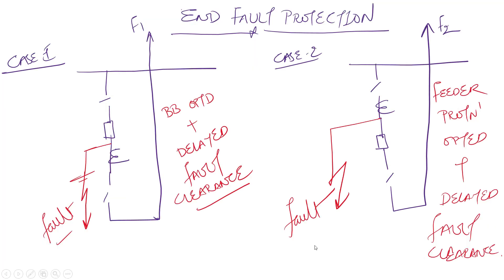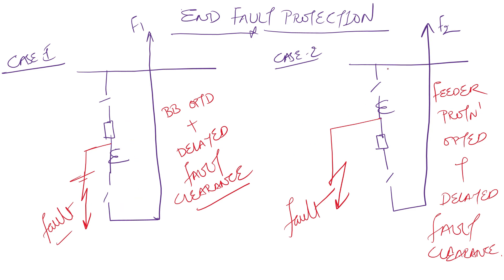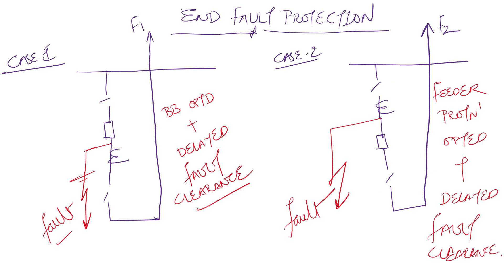I have drawn two SLDs in a single slide, for 1.5 CB scheme only. There can be two different cases. In case 1: disconnector, followed by breaker, CT, then second disconnector, and then your feeder. In case 2 (found in some substations or utilities): disconnector, followed by current transformer, then breaker, and then isolator, after which feeders are connected. Whether case 1 or case 2, end fault protection is important for both.